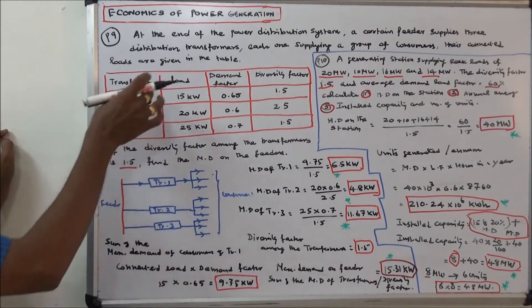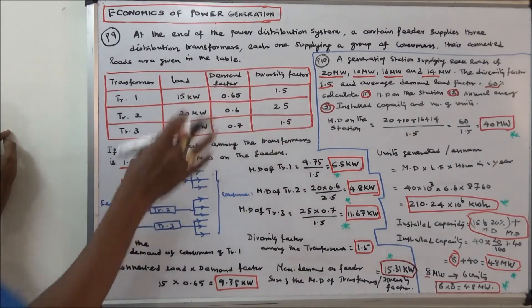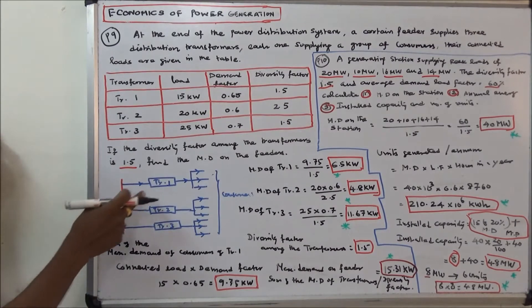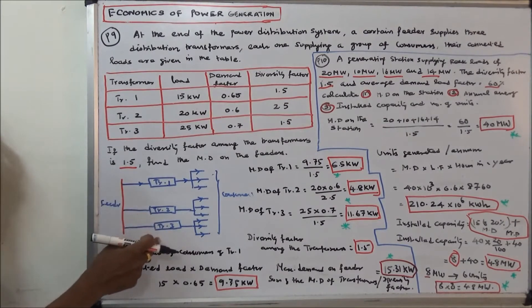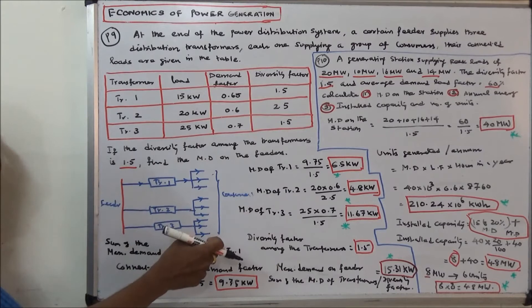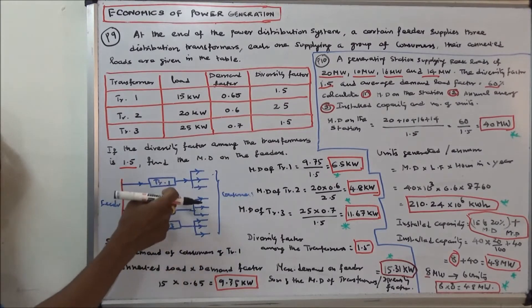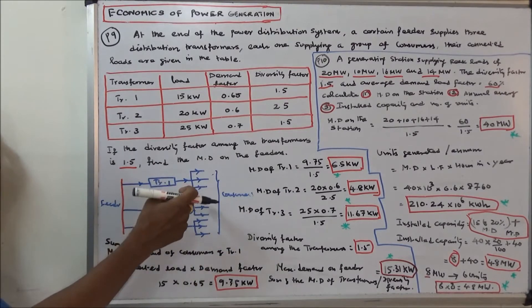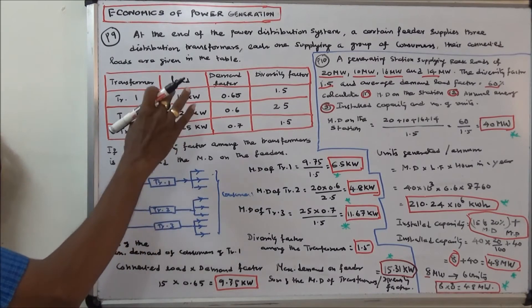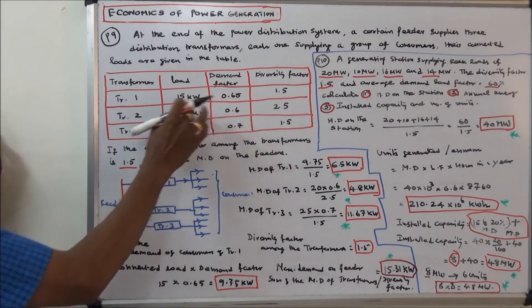The transformer load is given, the demand factor is given, and the diversity factor is given. This is the feeder supplying transformer one, transformer two, and transformer three — these are all the consumers. First, we calculate the sum of the maximum demand of consumers of transformer one, which is equal to connected load multiplied by demand factor.